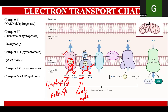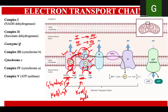The electrons from complex number one and two, which have been extracted from these high-energy molecules, are not able to transfer directly from complexes one and two to complex three. There needs to be something present in between, and that is coenzyme Q. This molecule takes up the electrons from complex number one and two and delivers them to complex number three, so all extracted electrons are delivered from complexes one and two to complex three.